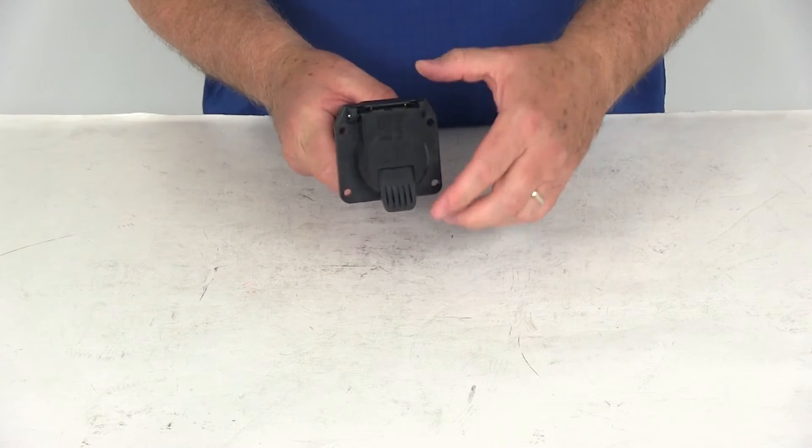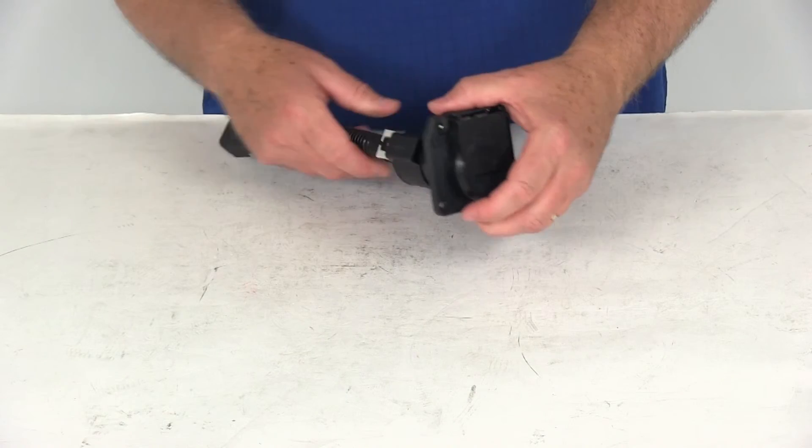Then it has the mounting holes. You just mount it to the back of your vehicle so you have access to the 7-Way.